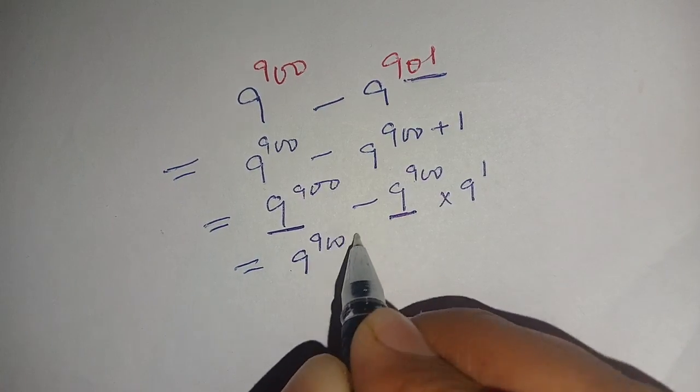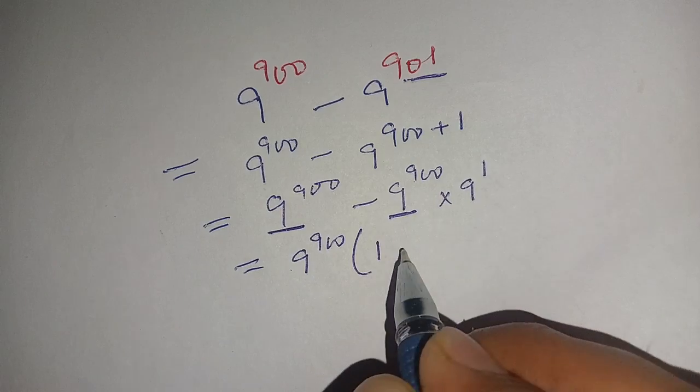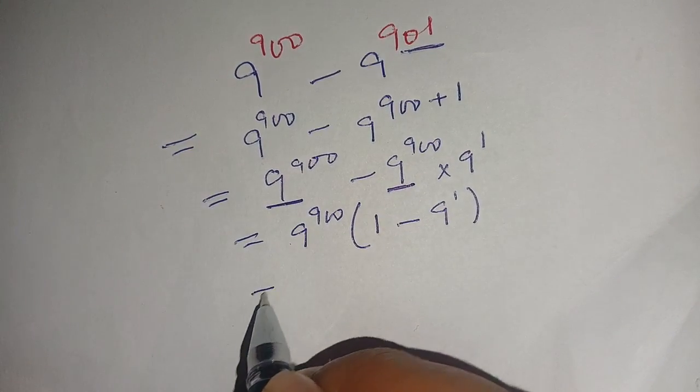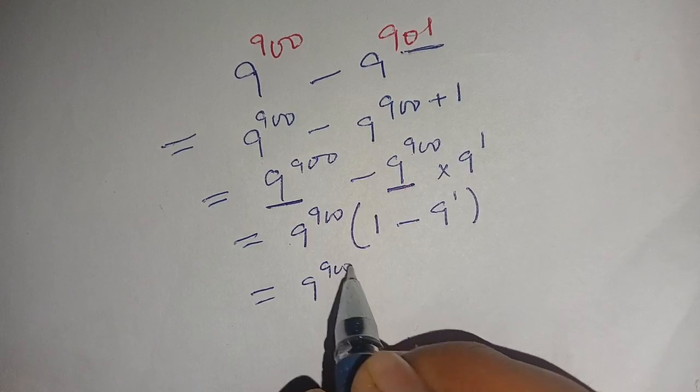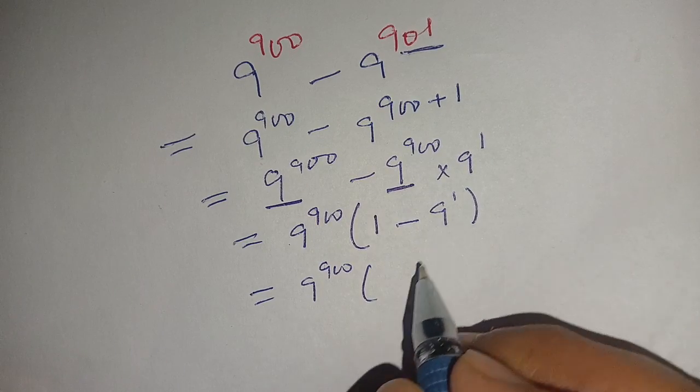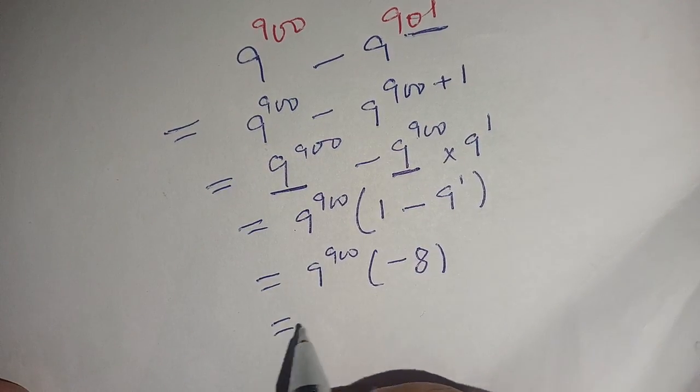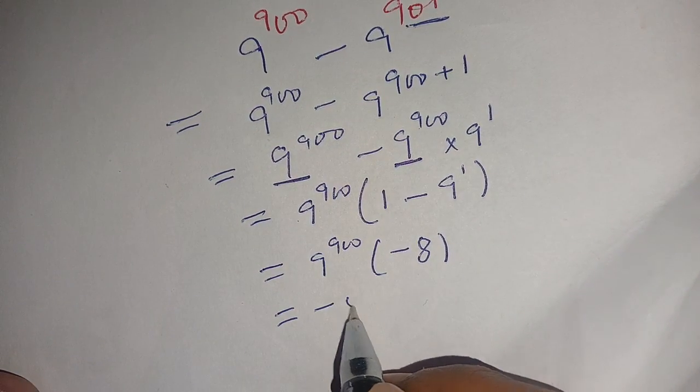We can write this as 9^900, and here the remaining is 1 - 9^1. We can write this as 9^900 times (1 - 9), which becomes 9^900 times (-8). Now we can write this as -8 times 9^900.